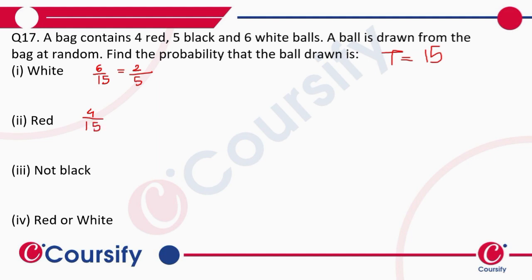So it is 4/15. Now, not black—not black means it is red or white. So 6 plus 4 is 10, and 10/15 is the probability of finding a not black ball, which equals 2/3. Red or white means not black, so it is 2/3.